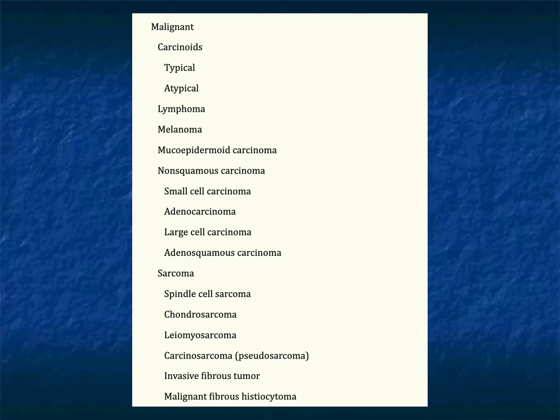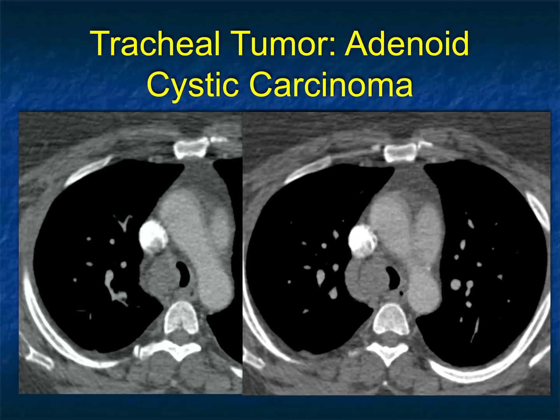The squamous cell is number one in frequency, and the ACC — adenoid cystic carcinoma — is number two. This was an adenoid cystic carcinoma, just a beautiful example compressing and narrowing the airway. The tumor is in the wall of the trachea. We usually think of tracheal involvement by extension from lung cancer or lymphoma, but you can think about primary tracheal malignancies. This was a great case.